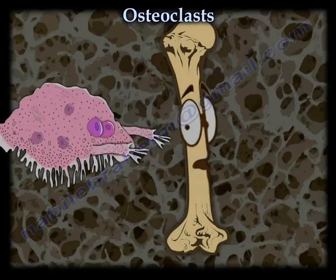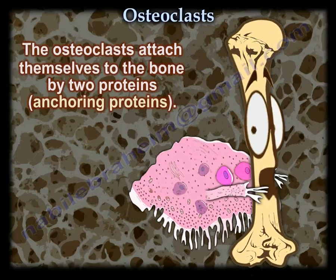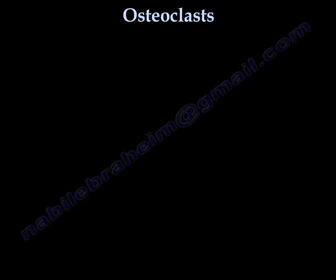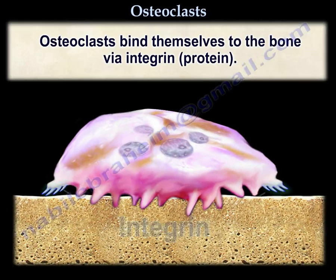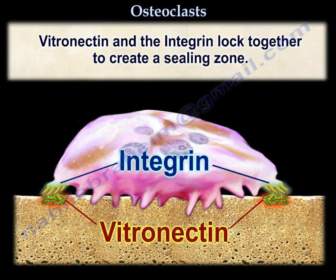Bone resorption occurs when the osteoclast attaches to the bone via two proteins — integrin proteins. The integrin is on the osteoclast and the vitronectin is on the bone; the integrin and vitronectin lock to each other, creating a sealing zone.